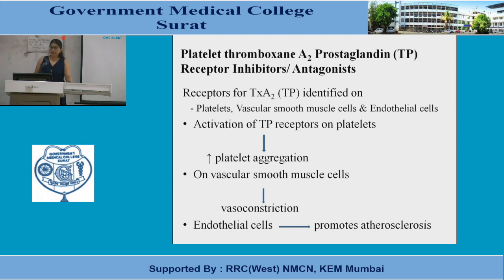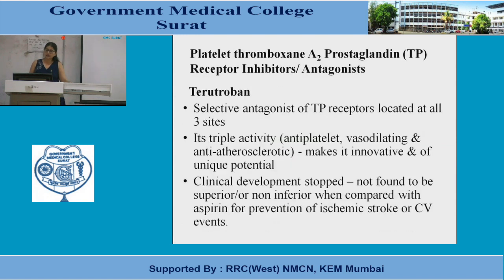Platelet thromboxane A2 prostaglandin receptor inhibitors, also called TP receptor inhibitors: receptors for thromboxane A2 are present on platelets, vascular smooth muscle cells, and endothelial cells. Activation of the TP receptor causes increased platelet aggregation, vasoconstriction on vascular smooth muscle cells, and promotion of atherosclerosis on endothelial cells. One drug is terutroban — a selective antagonist of TP receptors at all three sites, giving anti-platelet, vasodilating, and anti-atherosclerotic activity. However, clinical development was stopped as it was not found to be superior or non-inferior to aspirin in prevention of ischemic stroke or cardiovascular events.